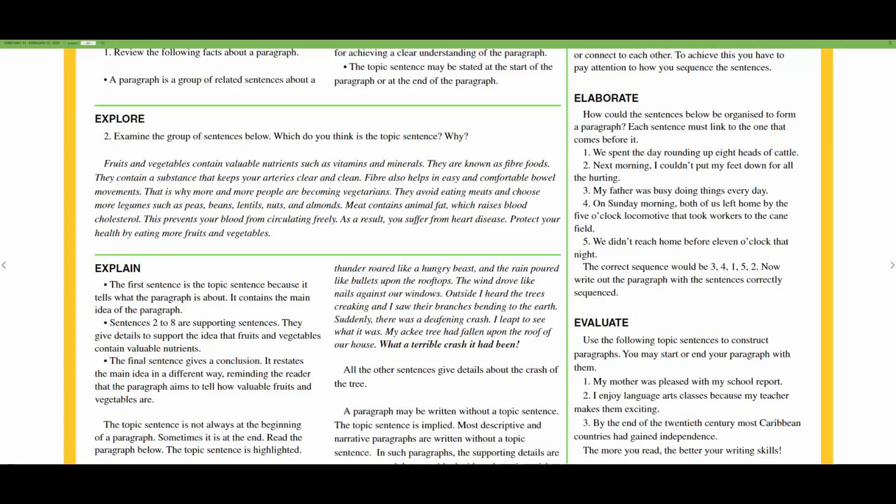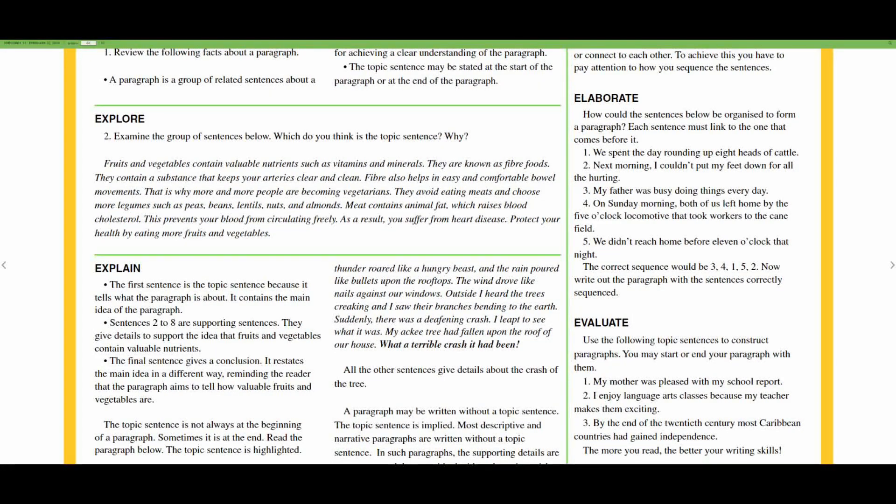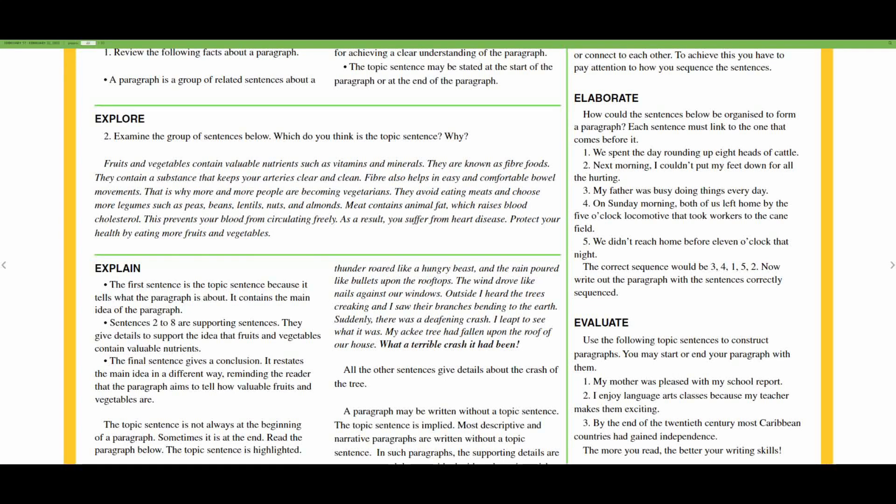The final sentence gives a conclusion. It restates the main idea in a different way, reminding the reader that the paragraph aims to tell how valuable fruits and vegetables are. The topic sentence is not always at the beginning of the paragraph. Sometimes it is at the end.